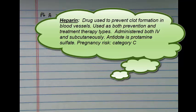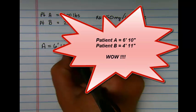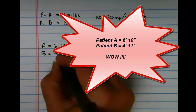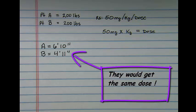If this were heparin and it were based solely on weight, both patients would receive the exact same dose. That's a problem if Patient A is 6'10" and Patient B is 4'11" because those two patients have completely different body types and metabolisms.